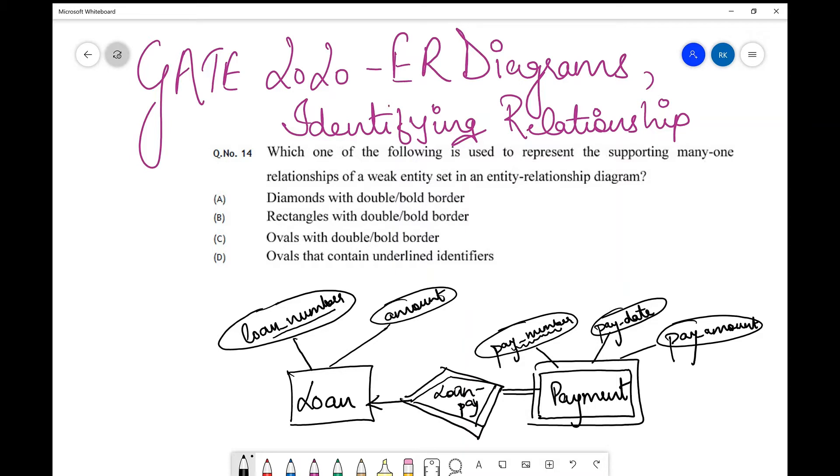In continuation to that, this is a direct question which, if you have seen that video, you can directly answer. Let's see what the question is and how we answer it. The question says: which one of the following is used to represent the supporting many-to-one relationships of a weak entity set in an entity relationship diagram? For many of you this might be a very simple question, but for some who don't know this or want to revise, this is helpful.